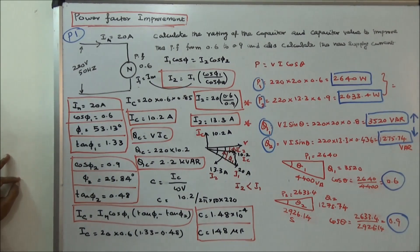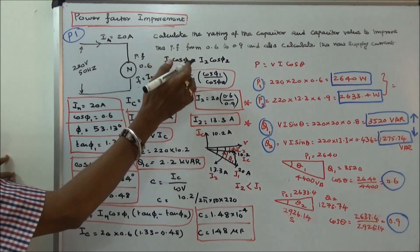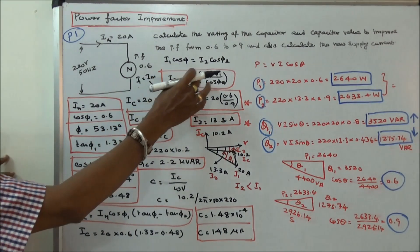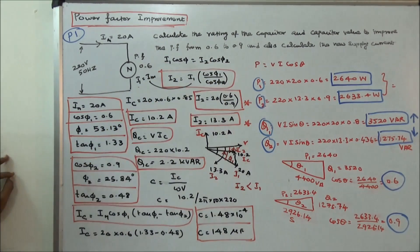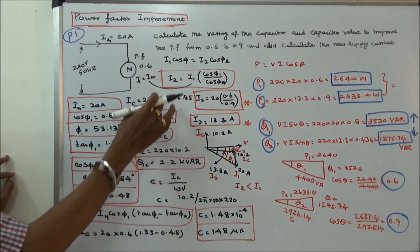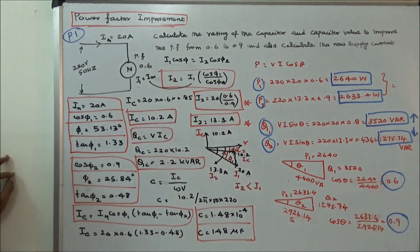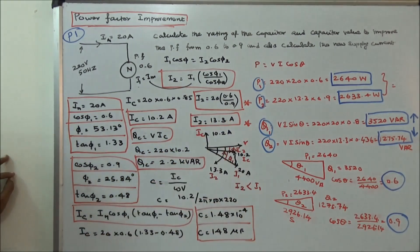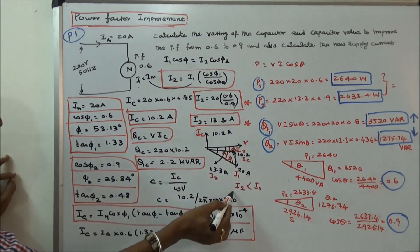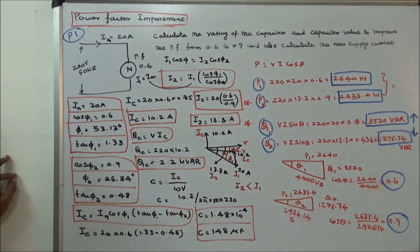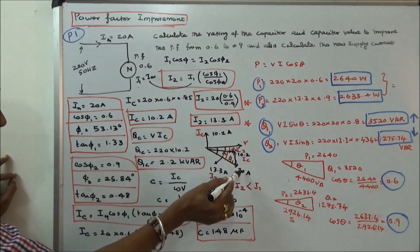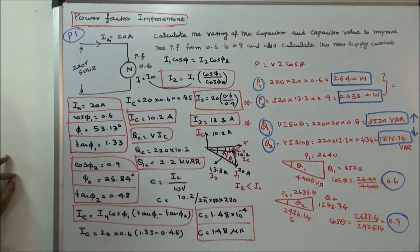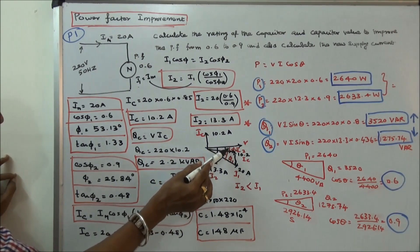Next, we calculate the new supply current. Using I1 × cos φ1 = I2 × cos φ2, I2 = Im × cos φ1 / cos φ2. The new supply current I2 = 13.3 amps. This is shown in the phasor diagram: I2 is less than I1. The supply voltage is shown, with 20 amps at angle φ1, 13.3 amps at angle φ2, and capacitor current 10.2 amps.